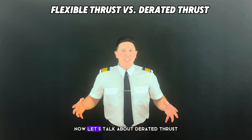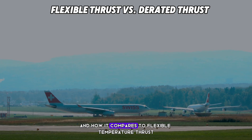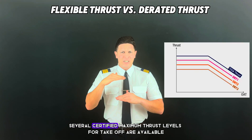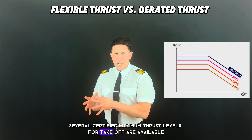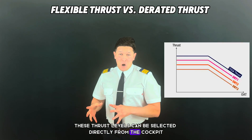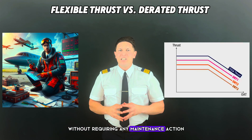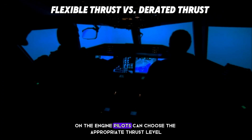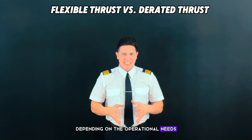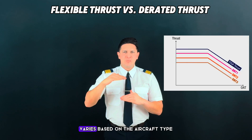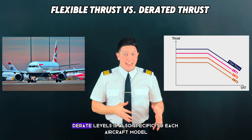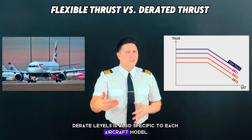Now let's talk about derated thrust and how it compares to flexible temperature thrust. For a given engine type, several certified maximum thrust levels for takeoff are available. These thrust levels can be selected directly from the cockpit without requiring any maintenance action on the engine. Pilots can choose the appropriate thrust level depending on operational needs, and the number of available derated thrust levels varies based on the aircraft type. The reduction in thrust between two derated levels is also specific to each aircraft model.